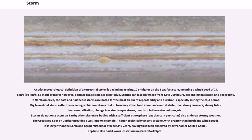In North America, the east and northeast storms are noted for the most frequent repeatability and duration, especially during the cold period. Big terrestrial storms alter the oceanographic conditions that in turn may affect food abundance and distribution, strong currents, strong tides, increased siltation, change in water temperatures, overturn in the water column, etc.